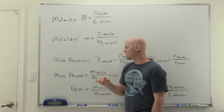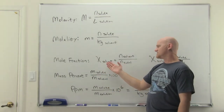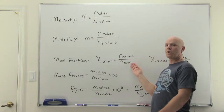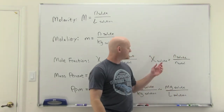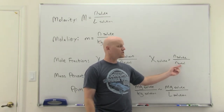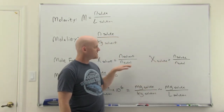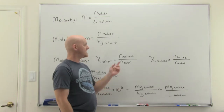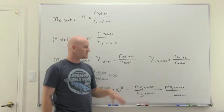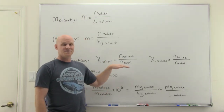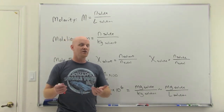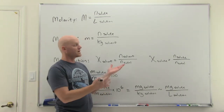Mole fraction (χ) is similar: the mole fraction of the solvent equals moles of solvent divided by total moles (solute + solvent), and the mole fraction of the solute equals moles of solute divided by total moles. We'll use the mole fraction of the solvent in Raoult's Law for vapor pressure depression. You've already seen mole fractions with Dalton's Law of partial pressures for gases.